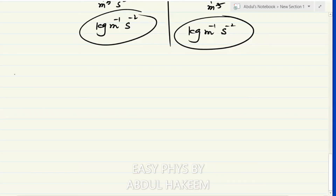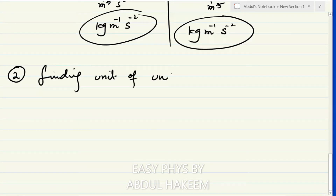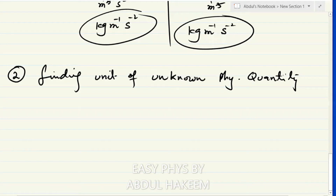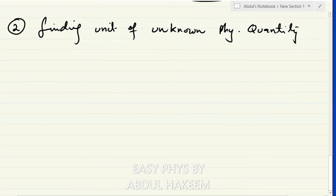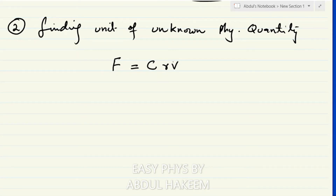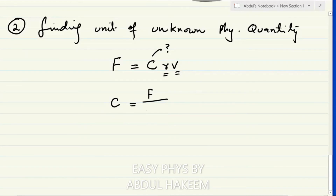Use number two is finding the unit of any unknown physical quantity. An equation will be given with one unknown quantity and we must find its unit. For example, given F = crv, where the equation is homogeneous, F is force, r is radius, v is speed, and c is unknown. We make c the subject: c = F/(rv).